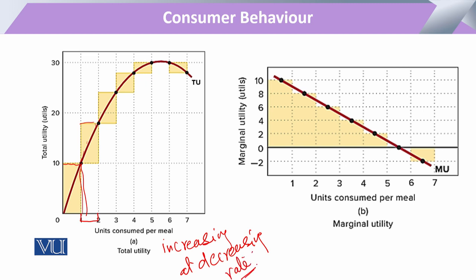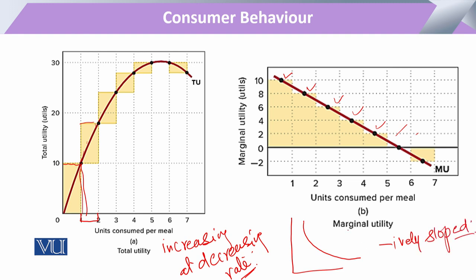Similarly, when we plot marginal utility against the same units, we see that at the first level our marginal utility was 10 — the highest — and after that it kept reducing. Marginal utility can be expressed with a straight line or sometimes in the form of a curve, but that should be negatively sloped, showing that marginal utility will be decreasing or diminishing over the consumption of any commodity.